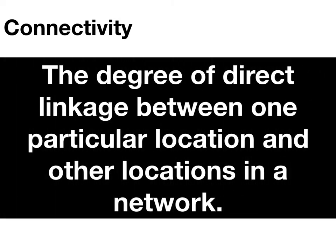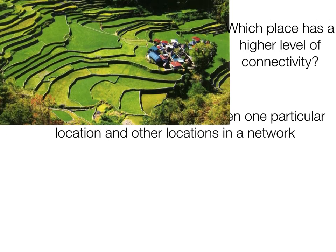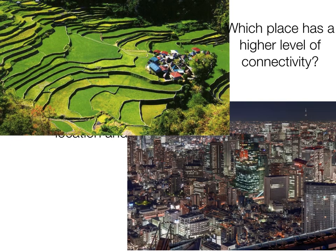The next term is connectivity, defined as the direct linkage between one particular location and other locations in a network. Which place has a higher level of connectivity — a village of rice terraces or a city? Obviously the city has a much higher level of connectivity. It's not just about electricity, internet, and telephone wires, which the village lacks, but also about transportation. The city likely has an international airport, roads, trains, highways, and most likely a port either in the city or close by.